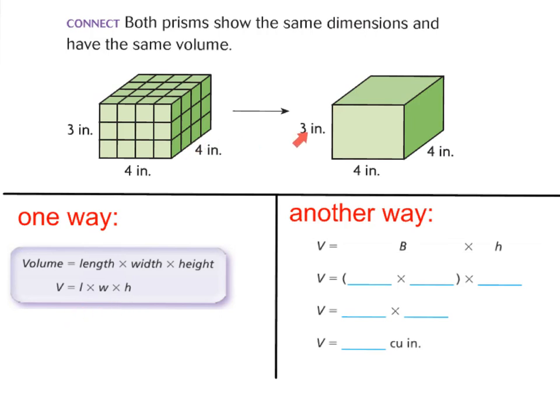As you can see here, both prisms show the same dimensions and have the same volume. You just don't see it in unit cube form. So we would still have 4 times 4, which is 16, and then you would multiply it by your height, which is 3.